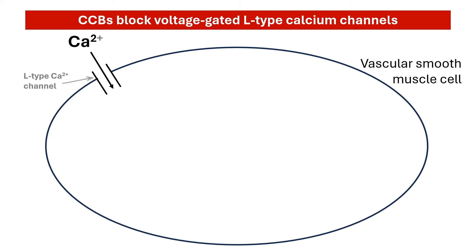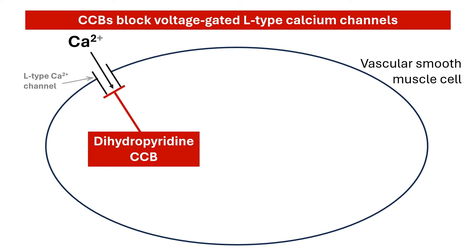As the name suggests, the CCBs bind to and block voltage-gated L-type calcium channels found on the smooth muscle cells. These channels are responsible for regulating the entry of extracellular calcium, an essential element involved in vascular smooth muscle contraction.